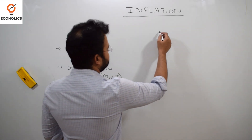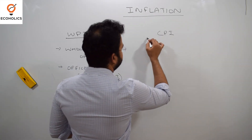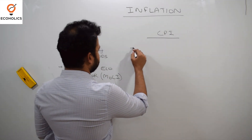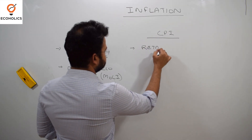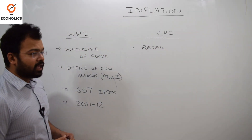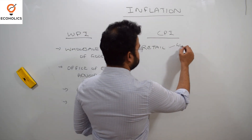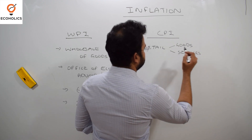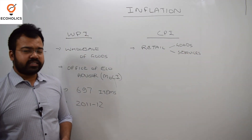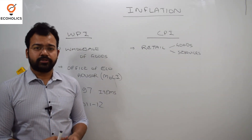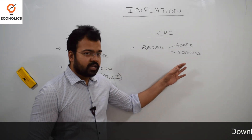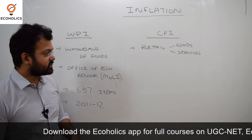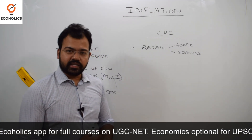Now, talking about the other one — CPI, Consumer Price Index. Under Consumer Price Index, it calculates retail prices, and the retail prices of both goods and services. As we know, 60% of our GDP contribution comes from the service sector, so WPI actually lacks somewhat by not including services. Under CPI, services are included.